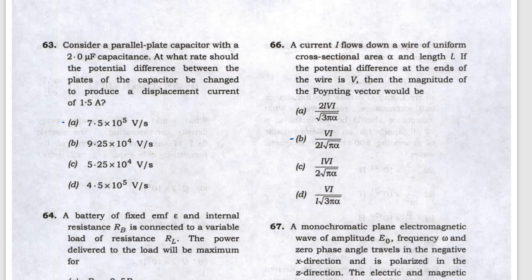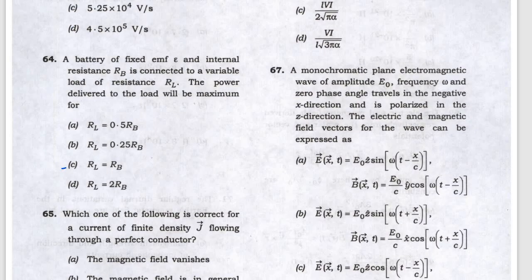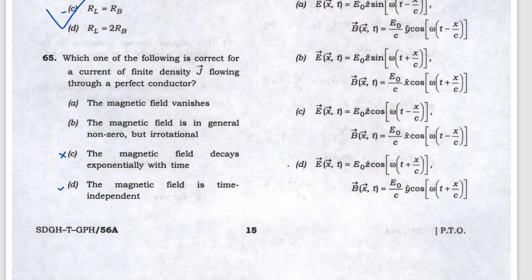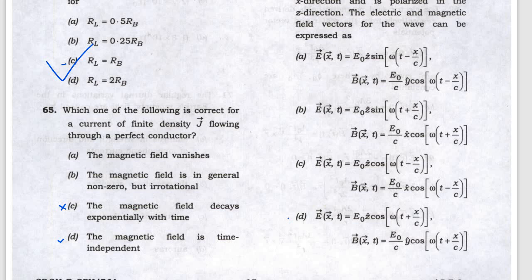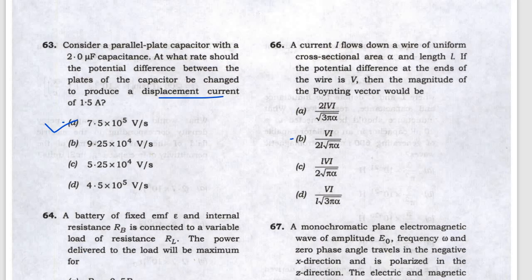Maximum power delivery occurs when the resistance values are equal, so answer C is correct. For the perfect conductor, curl of E equals minus del B del T. Since E is 0 inside, del B del T equals 0, and B equals constant. So magnetic field is time independent, and D is the answer.